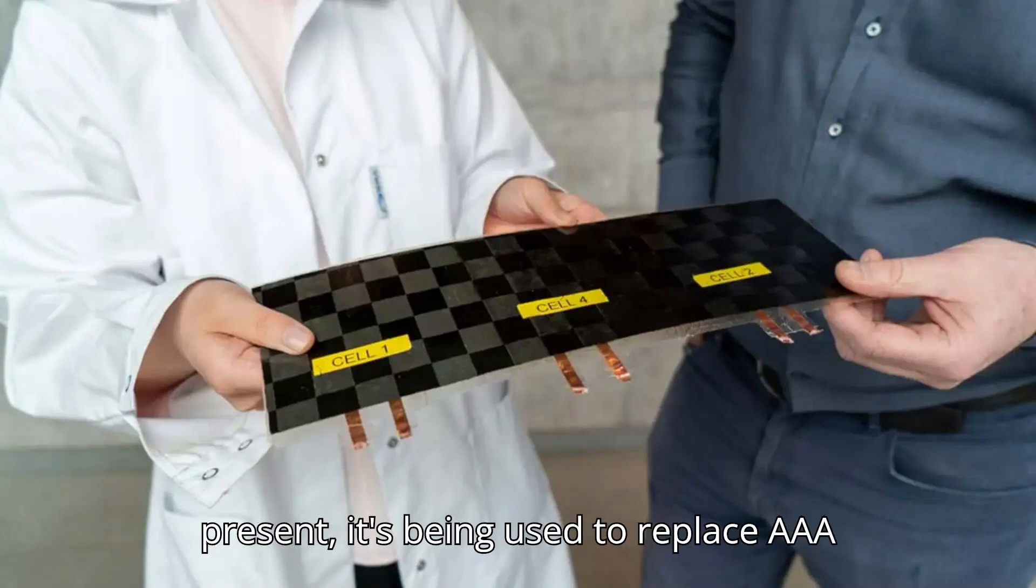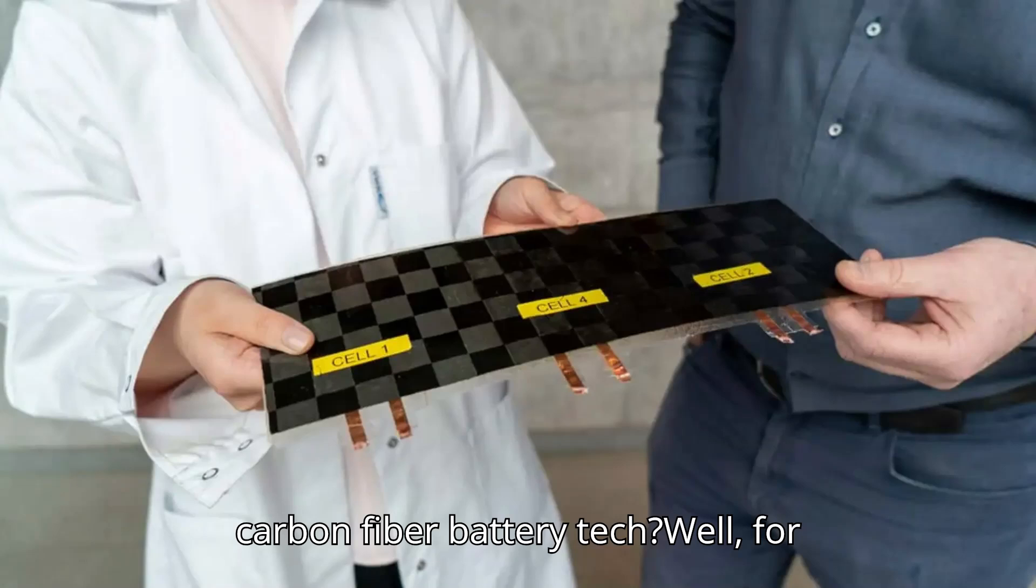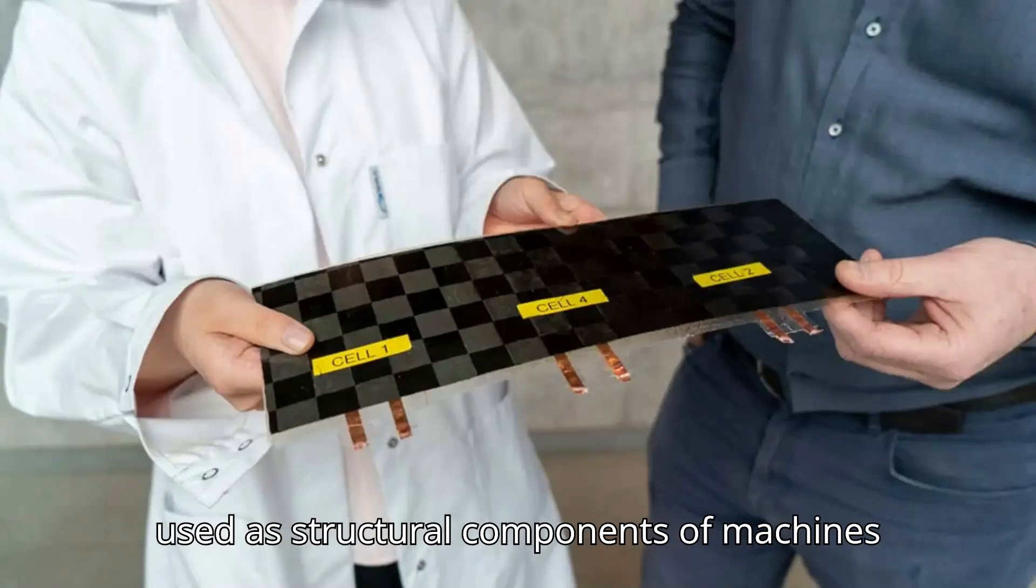But at present, it's being used to replace AAA batteries in small electronics. So what's the secret sauce behind this fancy carbon fiber battery tech? Well, for starters, apart from storing energy, this specific type of carbon fiber can also be used as structural components of machines and vehicles.